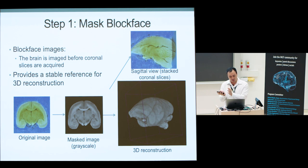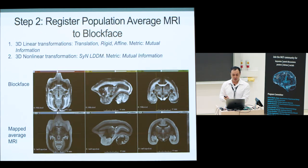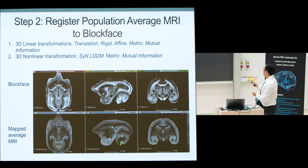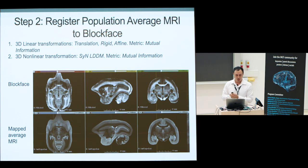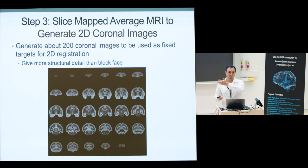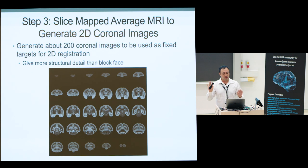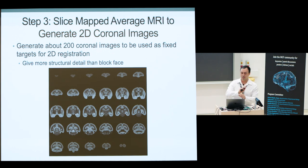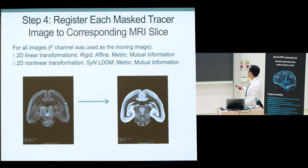The first step is to isolate the block face from the dry ice it's surrounded by, giving you a 3D reconstruction of the ex vivo brain. Then the idea is to register the population average MRI to the block face. The top line shows the horizontal, sagittal, and coronal views of the individual brain. Once registered, you can slice the MRI into the individual space and instead of using the low-contrast block face, you register the fluorescence images to the averaged MRI signal, using the ANTs normalization tools with both linear and non-linear registration.